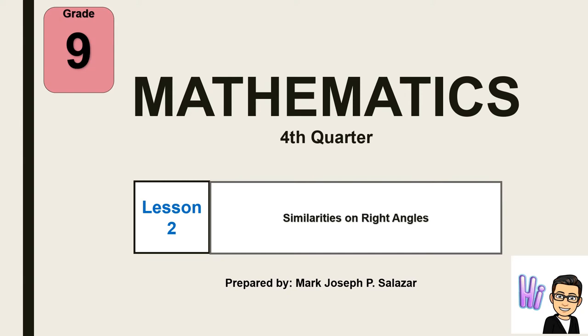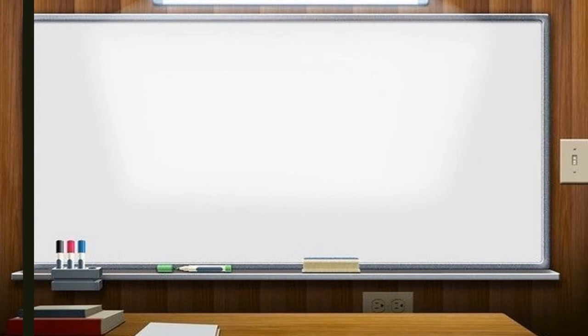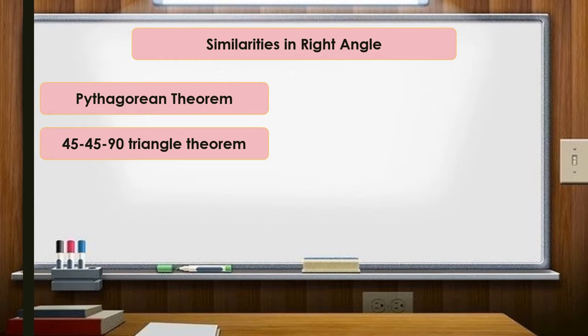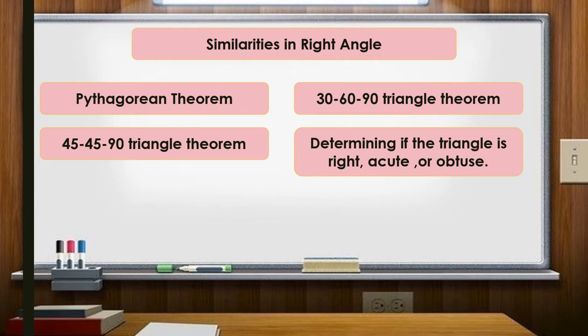This is Teacher Mark. Our lesson for today is all about similarities in right angles. The topics are: similarities in right angles, the Pythagorean theorem, the 45-45-90 triangle theorem, the 30-60-90 triangle theorem, and determining if a triangle is right, acute, or obtuse.